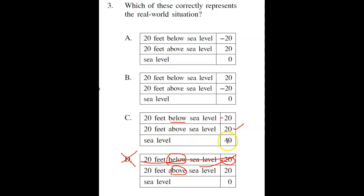But sea level would not be 40. Sea level is always 0. So between the first and the third one, C is not our choice.